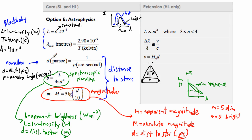Capital M is the absolute magnitude. It's defined as what the apparent magnitude would be if you place that star at a certain distance. D is the distance to the star, measured in parsecs. If the distance is exactly 10 parsecs, then D over 10 equals 1, and log of 1 equals 0, so M minus m equals 0, meaning little m equals capital M. That's why absolute magnitude is defined as the apparent magnitude a star would have at a distance of 10 parsecs.